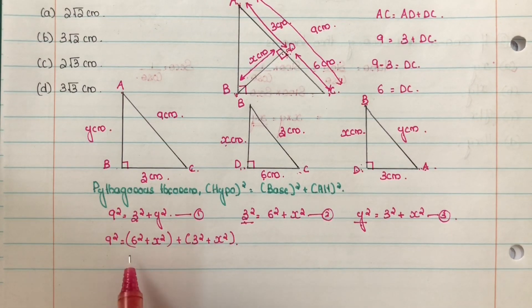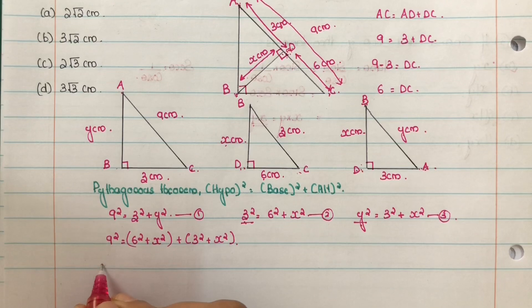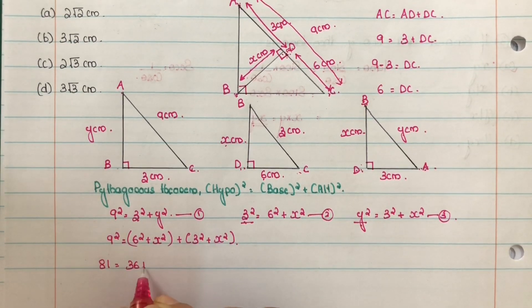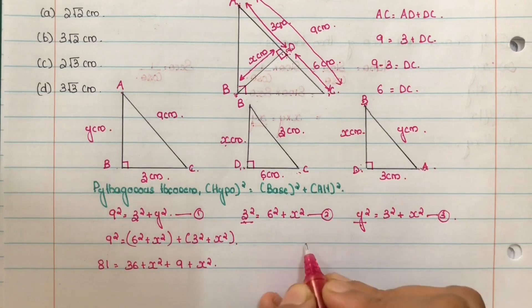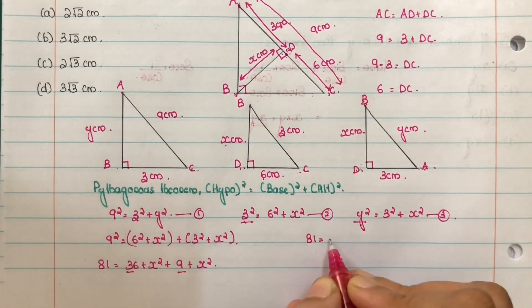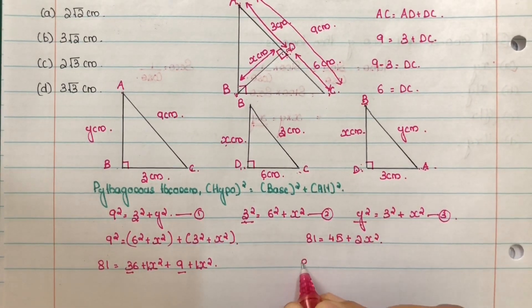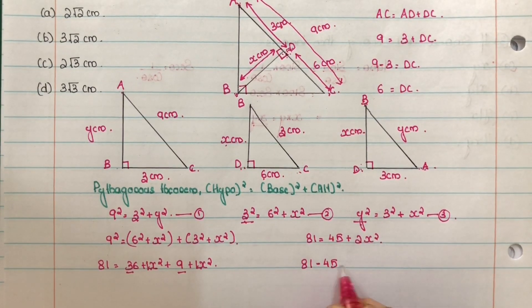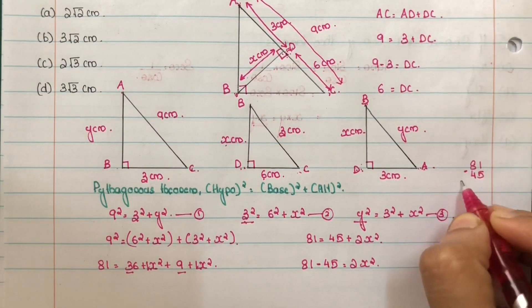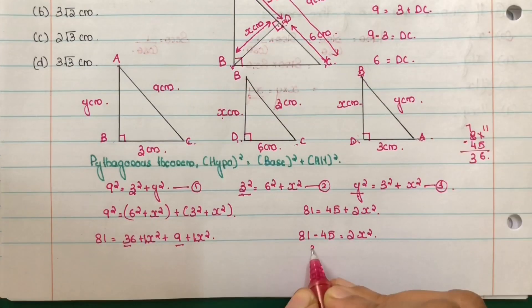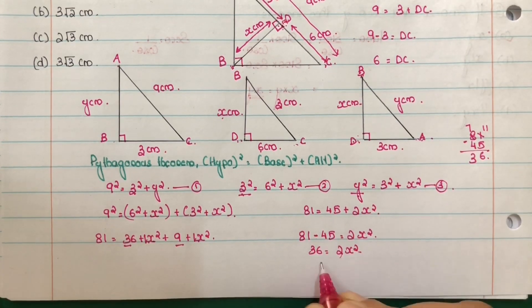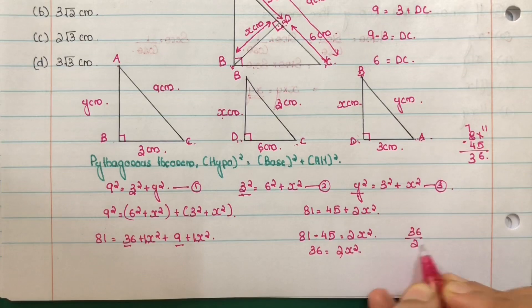Now, we solve the value of x. 9 square is 81 is equal to 6 square is 36 plus x square plus 3 square is 9 plus x square. That is 81 is equal to 36 plus 9 is 45 plus x square plus x square. x square is same as 1 x square. 1 plus 1, 2, 2 x square. So, 81, 45, minus 45 is equal to 2 x square. 81 minus 45 is 36. 36 equal to 2 x square. 18 is equal to x square.